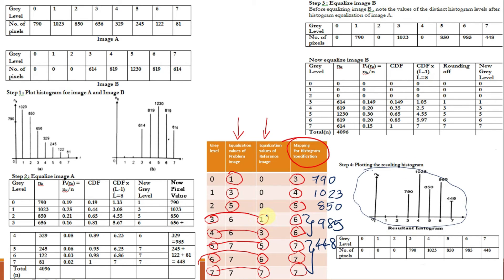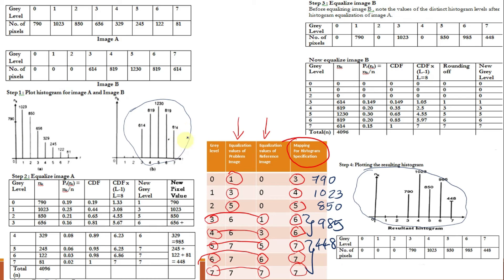What we have done here is inverse mapping — the inverse of the output values is mapped to the input values for histogram matching. Comparing the resultant histogram with our reference histogram, you can see that both histograms are matching. This means we have successfully done histogram matching or histogram specification: we matched the histogram of the original image to the reference image.